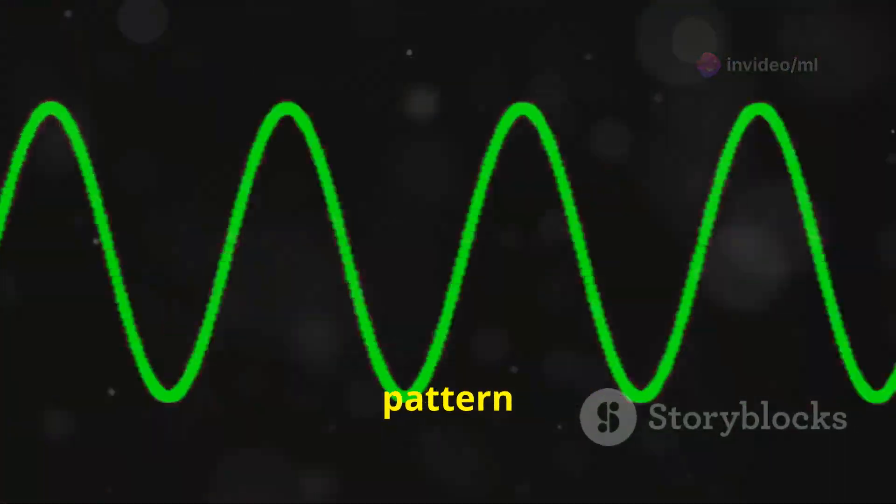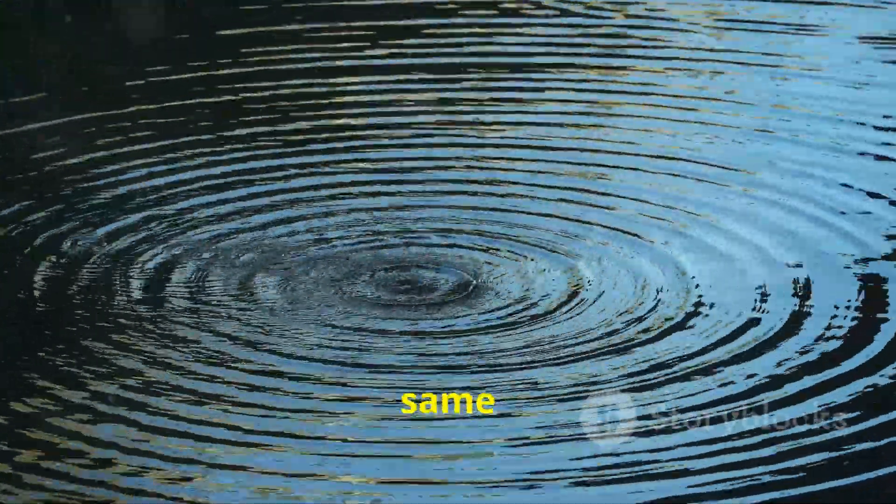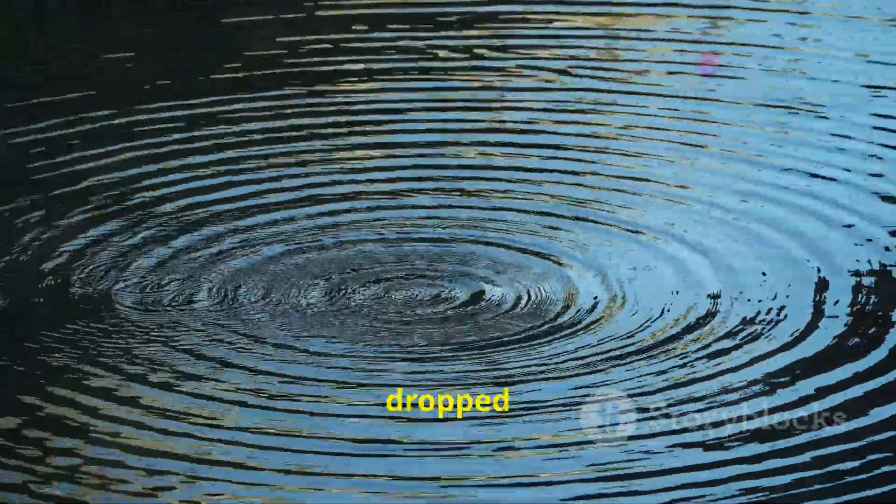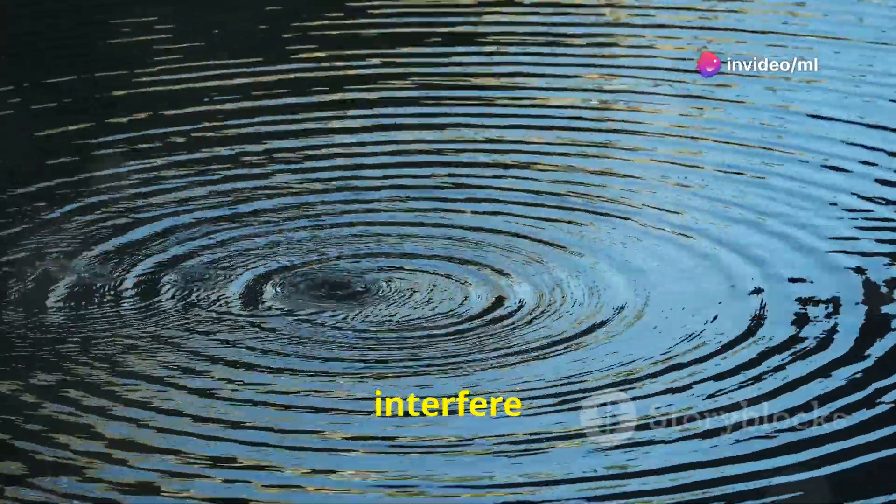This interference pattern is a tell-tale sign of wave behavior. It's the same kind of pattern you would see if you dropped two pebbles into a pond and watched the ripples interfere with each other.